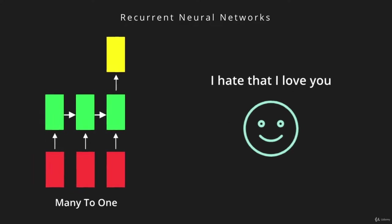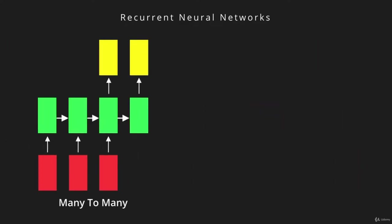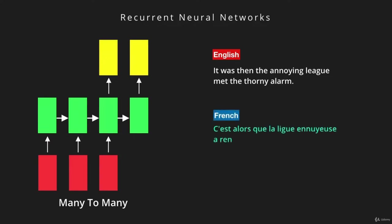A second useful recurrent neural network is the many-to-one network, which takes in many inputs at different steps and produces an output at the final step. This type is commonly used in sentiment analysis, where the words in a sentence are inputted at every step and a sentiment is produced as an output — describing if the sentence is positive or negative. A third network is the many-to-many network, which takes many inputs and produces many outputs, mostly useful for translating text from one language to another.